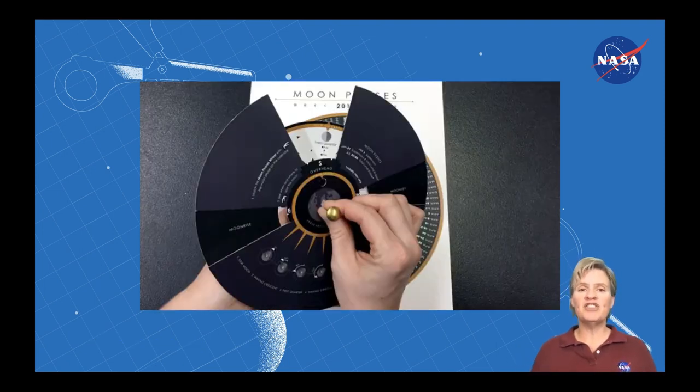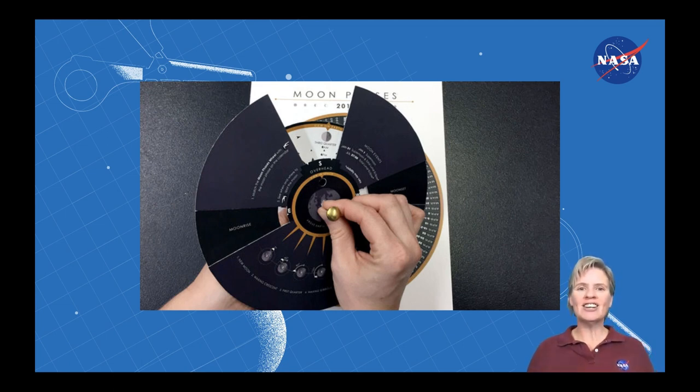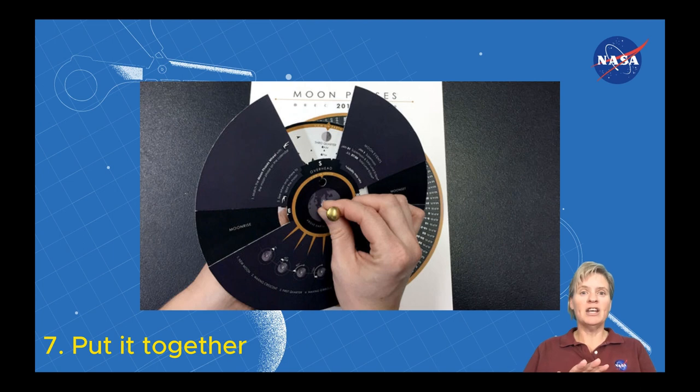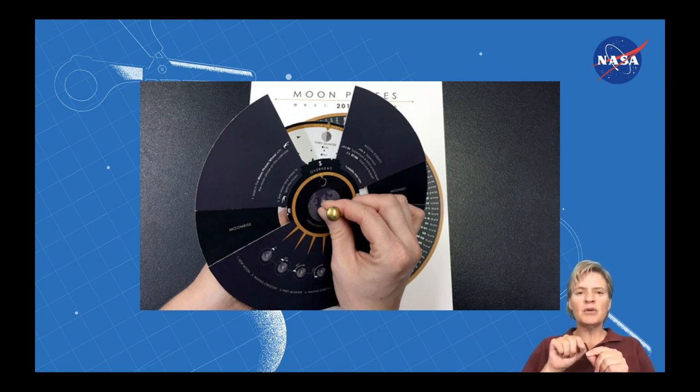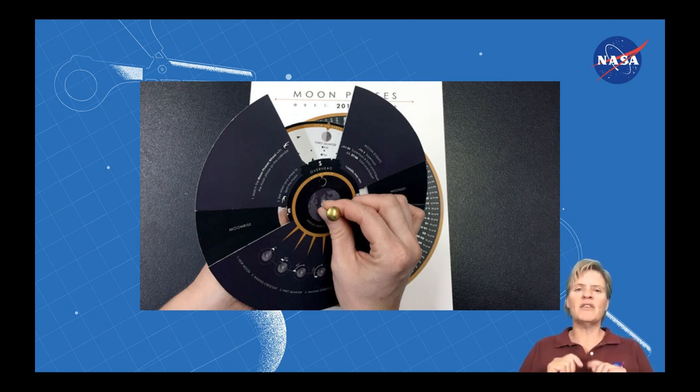Now it's time to assemble your moon phase calendar and calculator. You're going to assemble it just as shown right here. The viewing wheel, which looks a little bit like a dark fan, goes on top. Then the moon phase page that you already colored in. And then you're going to set those on top of the rectangular page that you didn't cut. Line up all the holes that you poked as a guide hole and put your brass fastener through those holes. And then spread the wings on the other side.